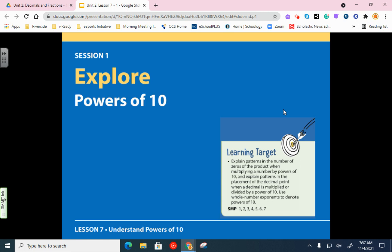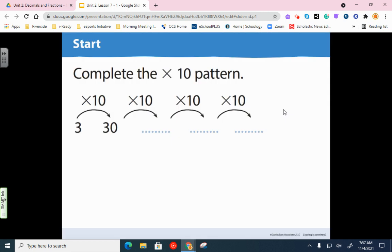But let's get right into the warm-up. So it says complete the times 10 pattern here. So we start with 3 times 10, which gives us 30. Then we do 30 times 10. And again, the way we learned how to do this before, like maybe a month ago, was to take these first numbers. And we've got 3 times 1.